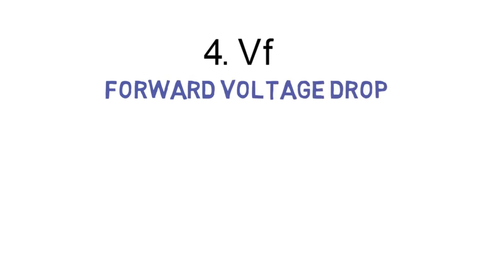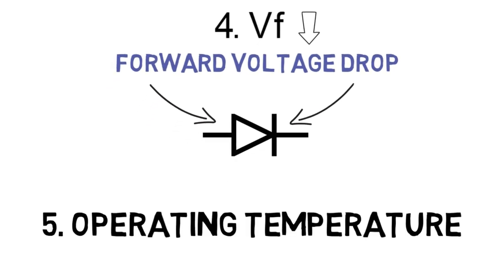Next is the forward voltage drop. It is the voltage across the diode when the diode is in forward bias, that is when it is conducting. It should be as low as possible. Next is the operating temperature. It is a temperature range which shows in which temperature condition the diode can work efficiently without being destroyed.